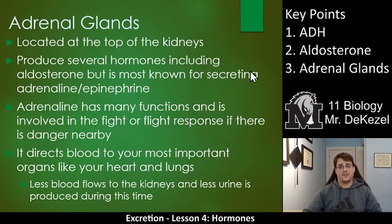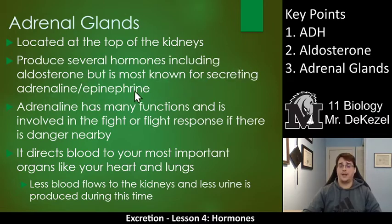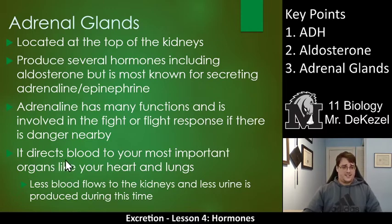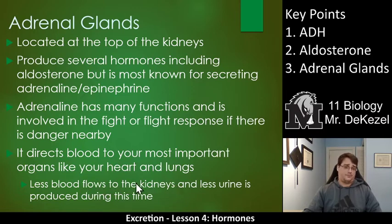The adrenal glands — key point three — are located on top of the kidneys. They produce a ton of different hormones, including aldosterone, but they're best known for secreting adrenaline, or epinephrine. Adrenaline has many functions; it's involved in the fight-or-flight response. Essentially, if you are scared, excited, or your heart is pumping, that is adrenaline working. What it does is direct blood to your most important organs like your heart and lungs, so you get less blood flow to your kidneys. It produces less urine during this time, but adrenaline is usually a short-acting hormone, so it is more involved in emergency situations.